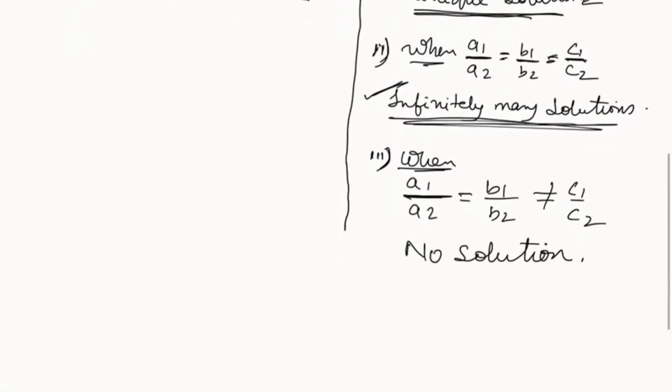And the third condition is when a1 by a2 equals b1 by b2 but is not equals to c1 by c2, then there is no solution for the pair of linear equations.